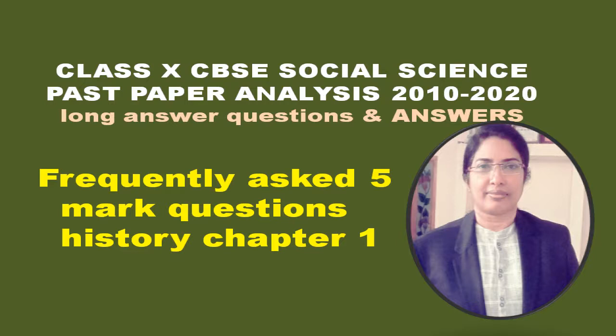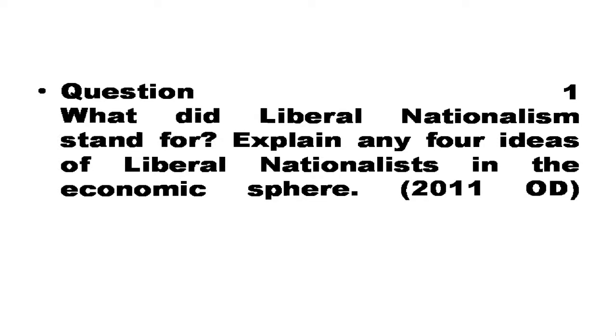For example, Napoleon's administration was a confederation of 29 states, each possessing its own currency, weights and measures. Such conditions were viewed as obstacles to economic exchange. Liberal nationalists argued for the creation of a unified economic territory allowing the unhindered movement of goods, people and capital. In 1834, a customs union or Zollverein was formed, which abolished tariff barriers and reduced the number of currencies from 30 to 2. The creation of a network of railways further stimulated mobility, harnessing economic interest to national unification.